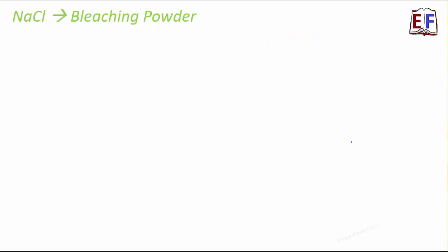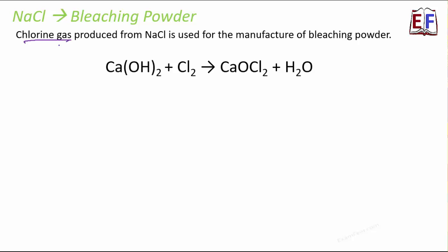The next product is bleaching powder. Where have you heard that we use bleaching powder? To bleach clothes like bleaching cotton or bleaching linen. That's where we normally use bleaching powder. How is bleaching powder formed? Bleaching powder is formed from chlorine gas. From where do we get chlorine gas? From NaCl. From NaCl, we get chlorine gas. And this chlorine gas is used for the manufacture of bleaching powder. When Ca(OH)2, that is dry slaked lime, reacts with chlorine, it forms bleaching powder. That is CaOCl2. And water is released as part of the process.